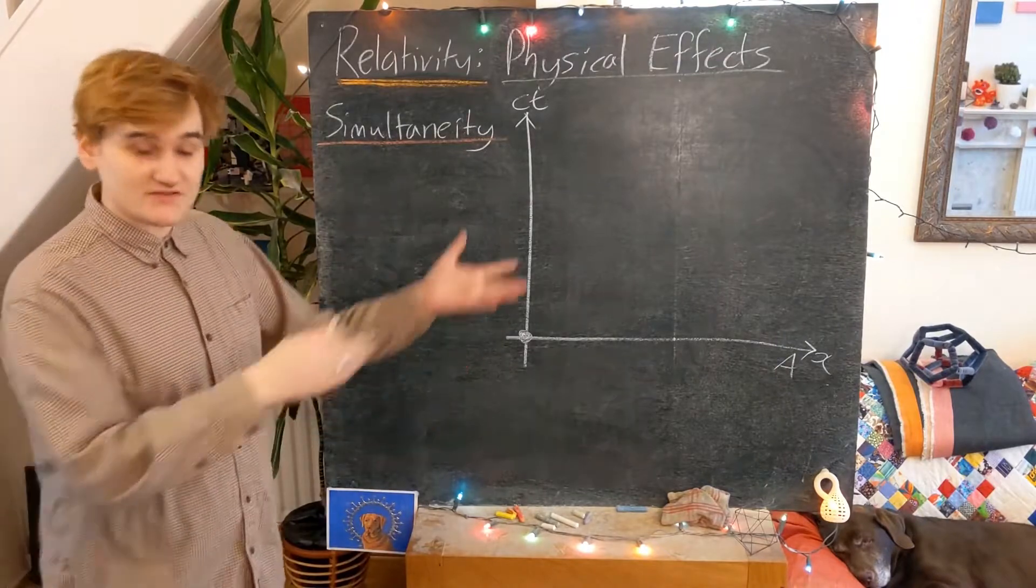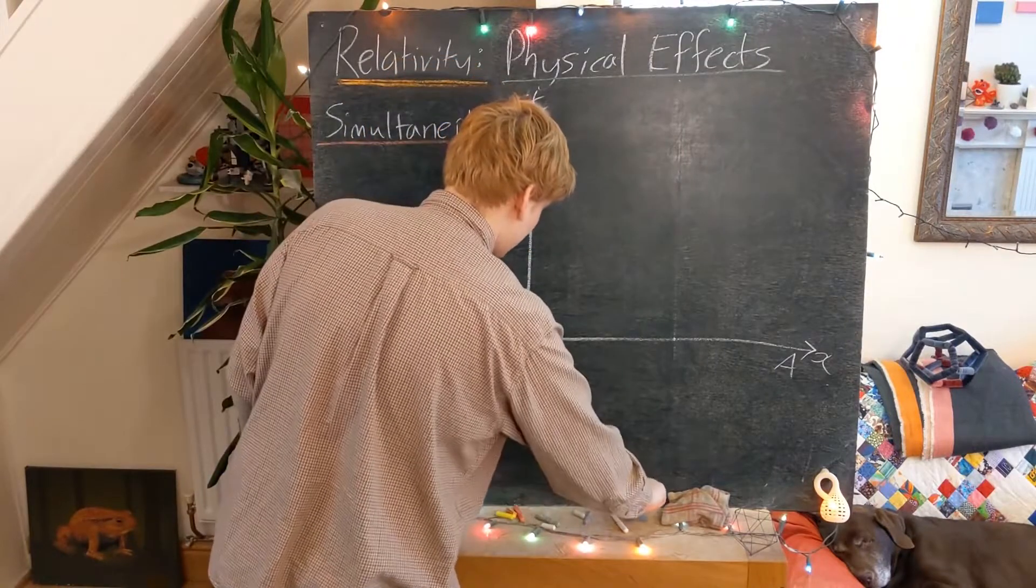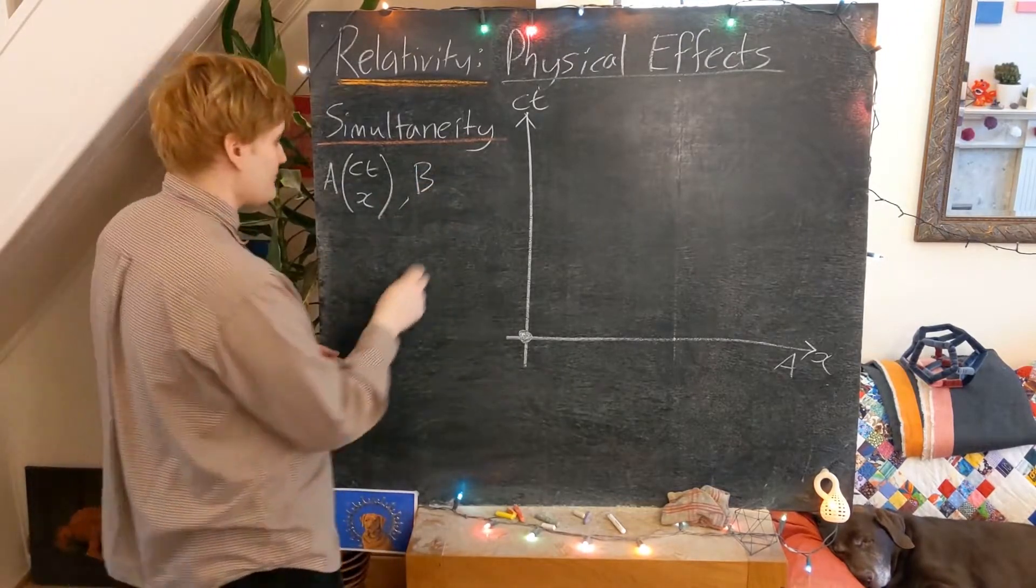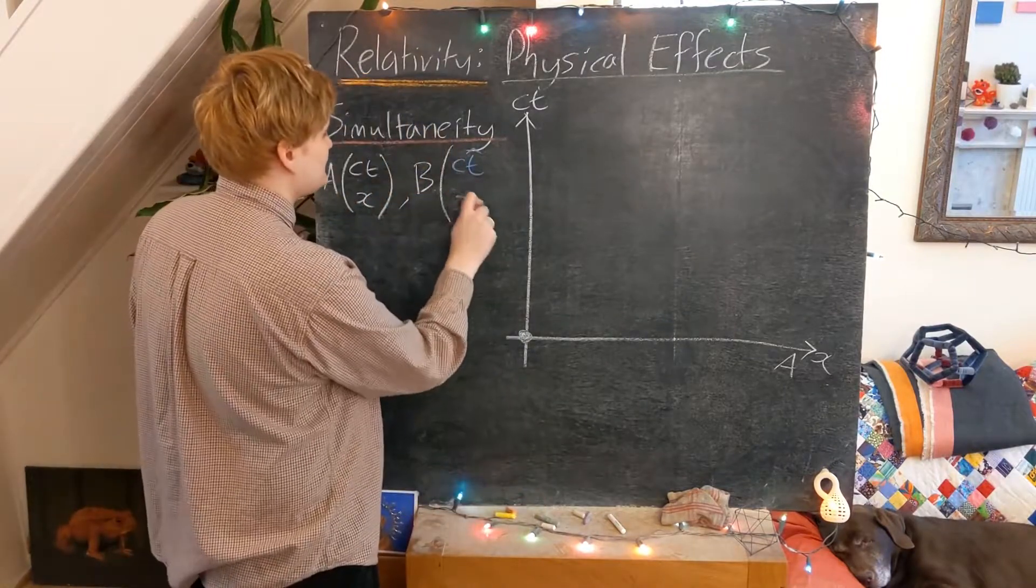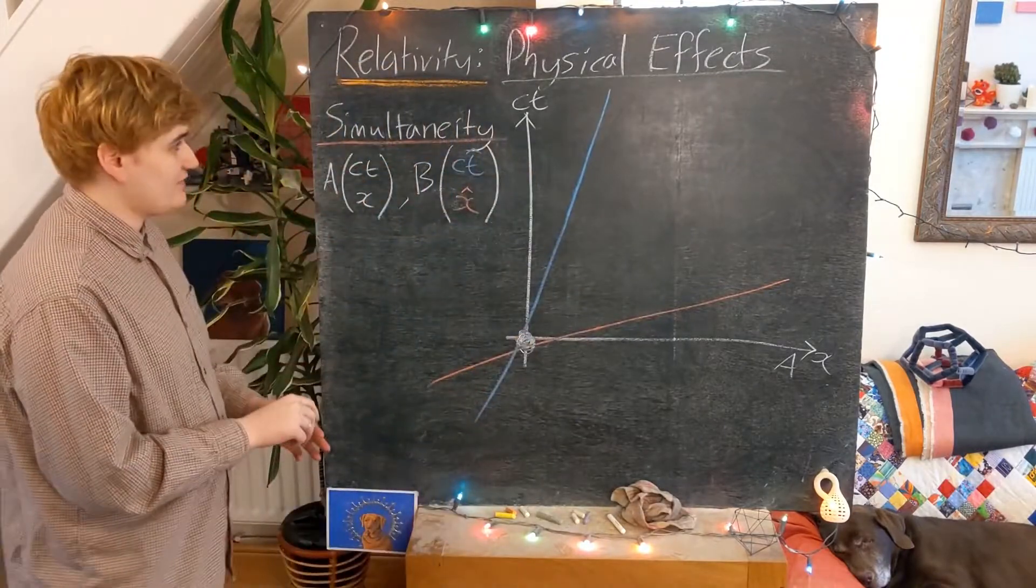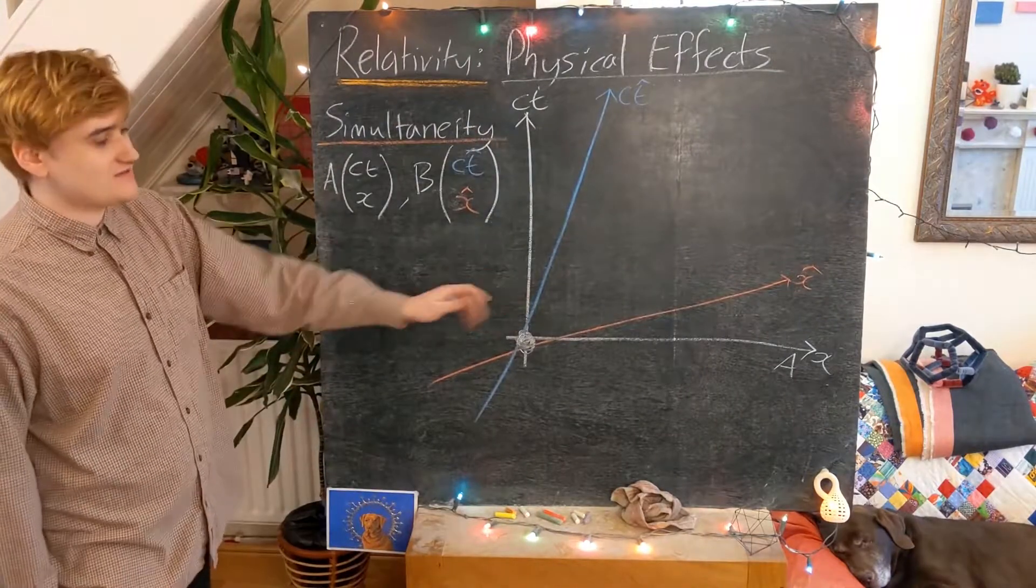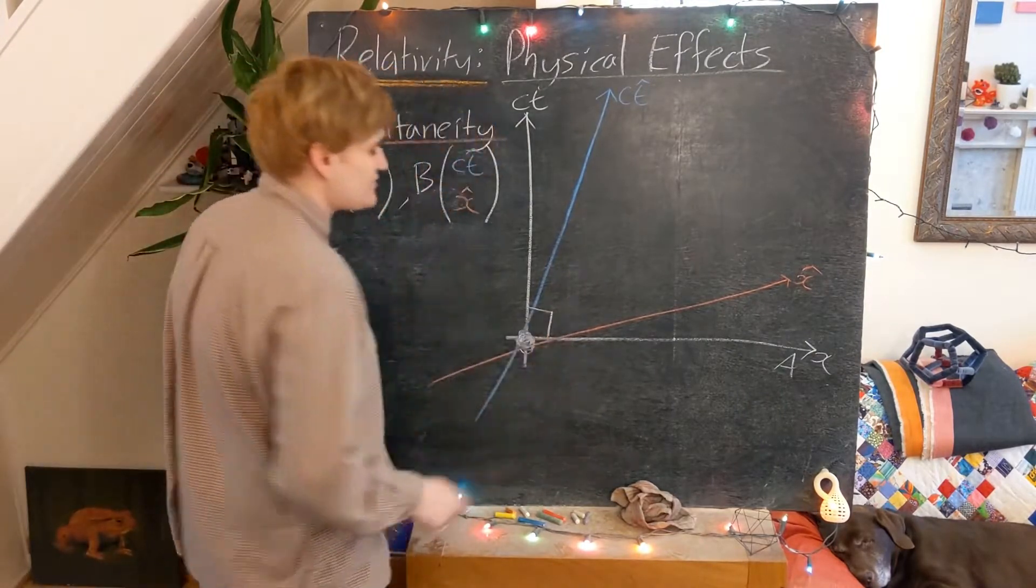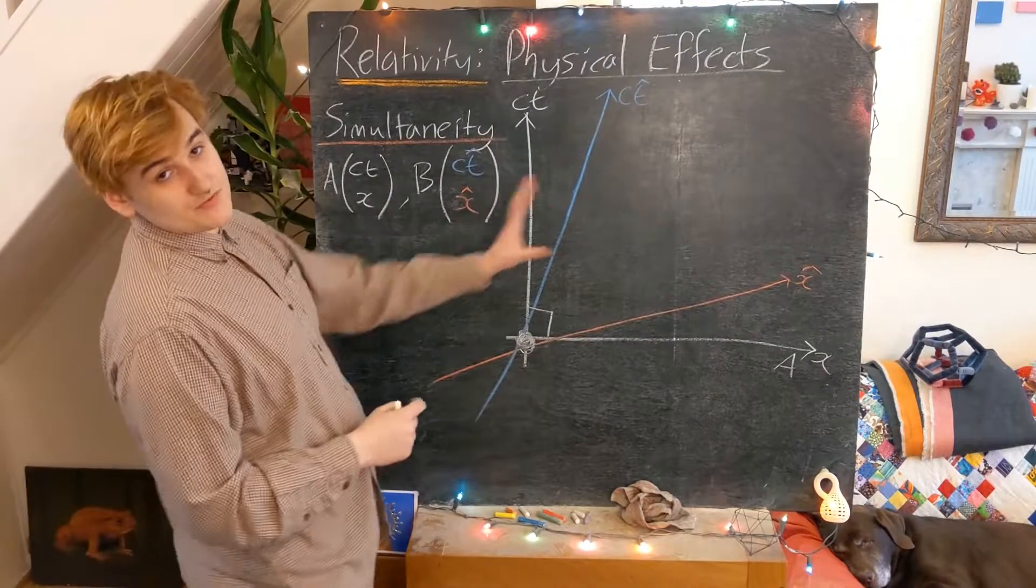And now I'm going to introduce a boosted observer, which we remember has these now scissored axes. So I'm going to say we have the observer A, and then the observer B, which is going to be a boosted observer. So I'm going to give it color-coded coordinates again. So T-hat and X-hat. So big origin to cover my mistakes there. Okay, so hopefully you're familiar with what I've drawn here, these now boosted axes. The orthogonal axes correspond to our stationary observer. And then these slightly non-perpendicular axes are our boosted observer.